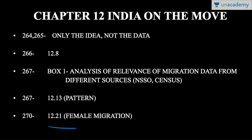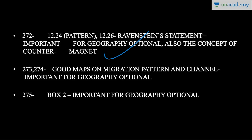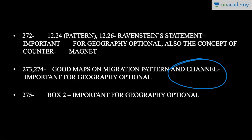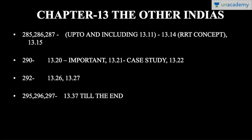On page 270, paragraph 12.21 on female migration is very very important. Page 272, paragraph 12.24 covers patterns, and paragraph 12.26 discusses Ravenstein's statement — important for Geography optional — as well as the concept of magnet and counter-magnet. Pages 273-274 and 275 have good maps on migration patterns and channels, and Box 2 — all important for Geography optional. If you don't have Geography optional, you don't need to read this section.